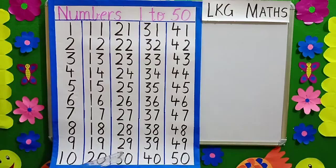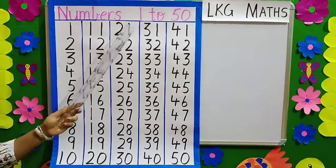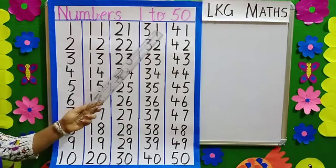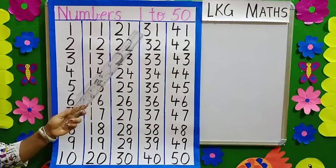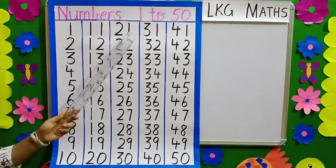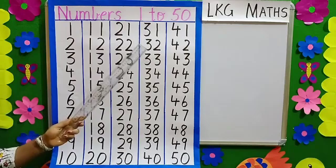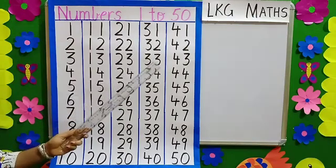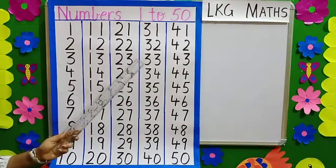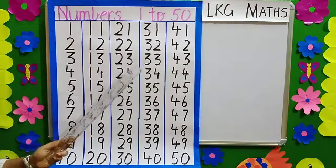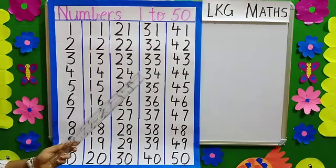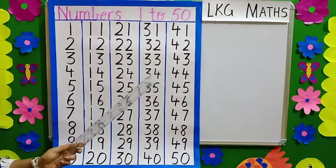3, 0 — 30. 3, 1 — 31. 3, 2 — 32. 3, 3 — 33. 3, 4 — 34.